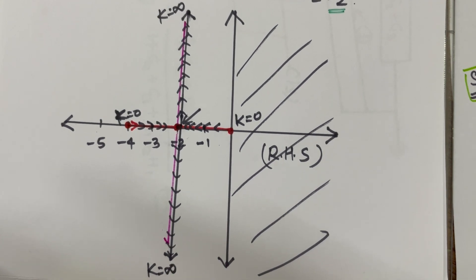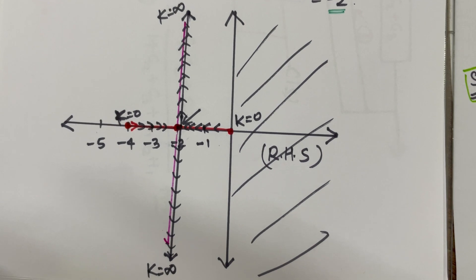In next video, I will take another example with three poles. And we will see how the angle of asymptote changes and how we draw the root locus for that. Thank you.